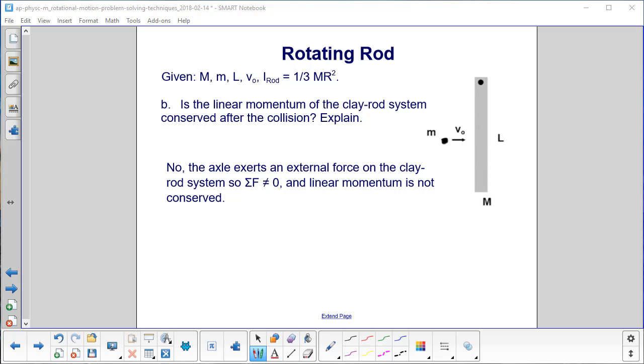Is the linear momentum of the clay-rod system conserved after the collision? Explain. No. Why? There is an external force. Where? Okay, this is not the external force. This is part of the system, the clay and the rod. But look at this axle up here. That is exerting an external force on the system. So as the system tries to move, if it tries to translate to the right, it can't because of that axle. So if you have an external force, the sum of the forces is not equal to zero, and your linear momentum is not conserved.